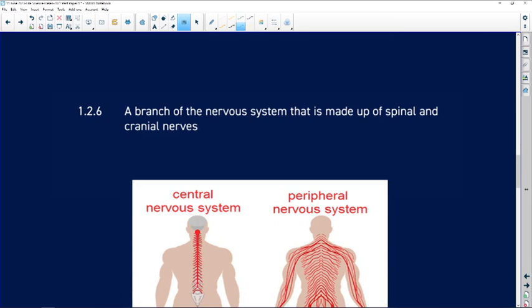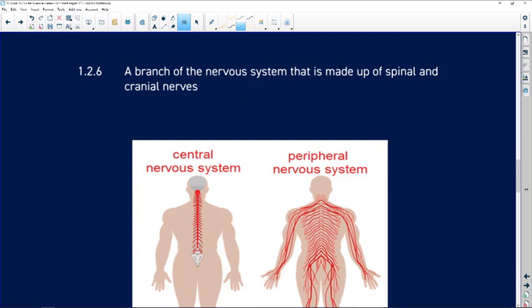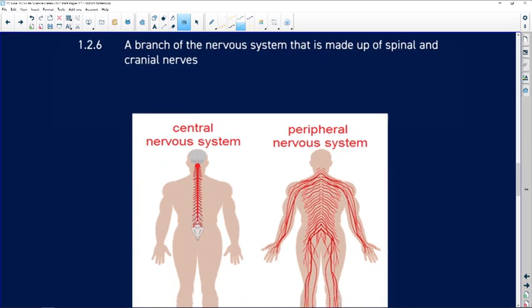A branch of the nervous system that is made up of spinal and cranial nerves. Now, this one's a little bit confusing because cranial, you might think, belongs to the brain and spinal belongs to the spine. So you might think that the answer there is central nervous system.